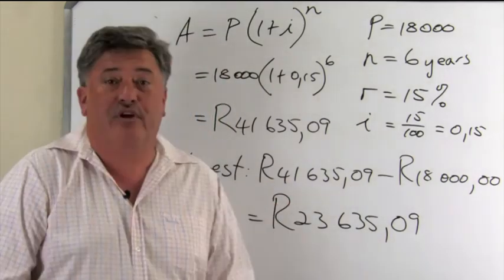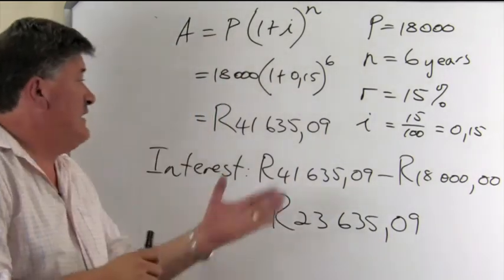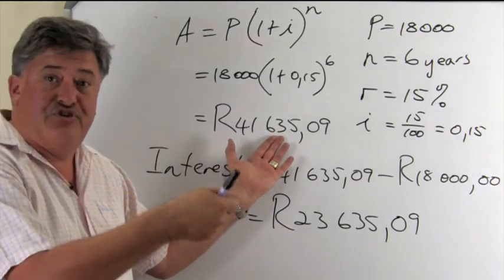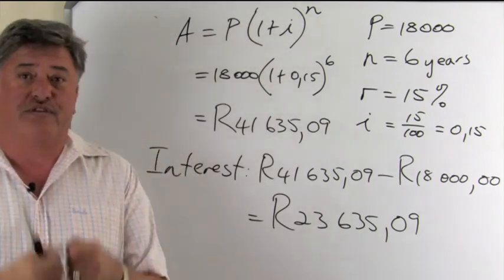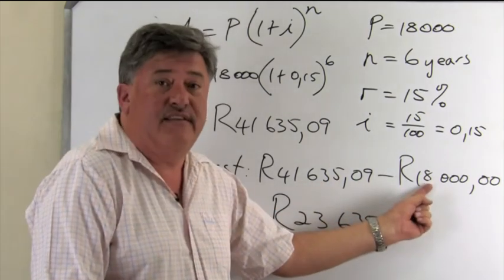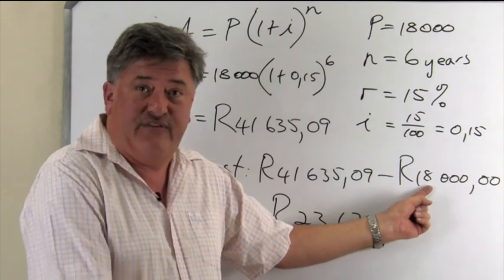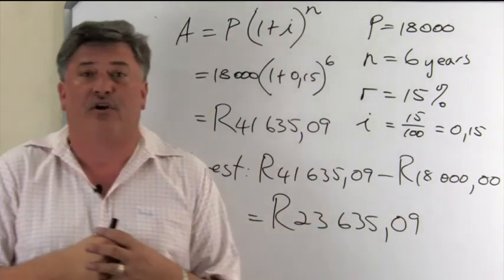So, the two answers to the question then, first answer, what is the future value? Is that 41,635 rand and 9 cents. What was the interest? You subtract the 18,000 because that was the money you invested. So, that is your interest.